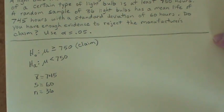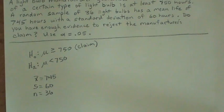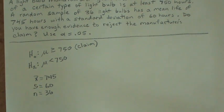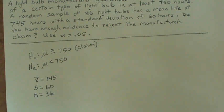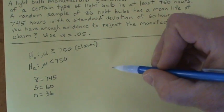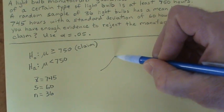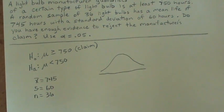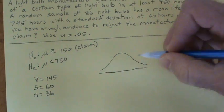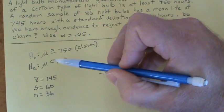Now because our sample size is at least 30, we can use a normal distribution to test this sample. And so what we're going to do is I'm going to draw just a really pathetic-looking bell-shaped curve here to indicate that we're going to use a normal distribution to test this.